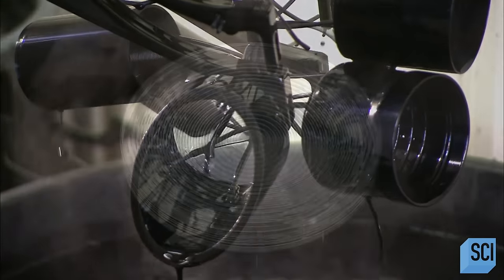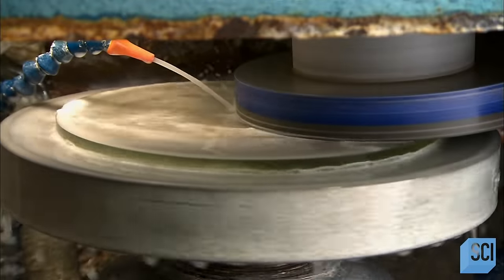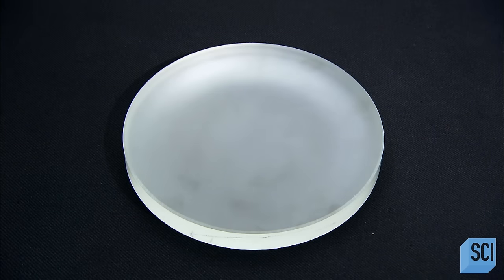Next, this molded disc of thick, low-expansion glass will become the telescope's primary mirror. A diamond-edge tool rotates on a calculated tilt to make the glass slightly concave.